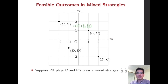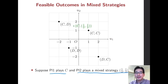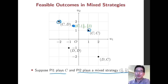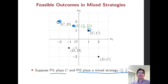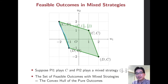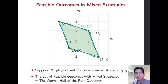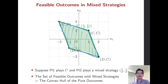Now let's allow mixed strategies. For instance, player 1 plays C and player 2 plays a mixed strategy between C and D with equal probability 1/2 and 1/2. Then each outcome happens with probability 1/2, giving an expected payoff represented by a point between those outcomes. If we consider all possible combinations of mixed strategies, the set of feasible outcomes becomes the convex hull of the four pure strategy outcomes.